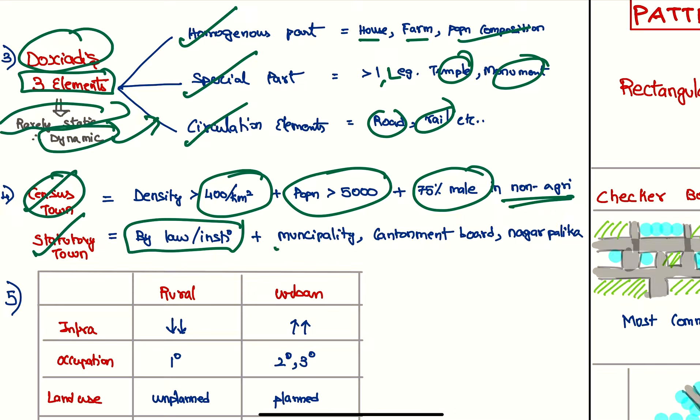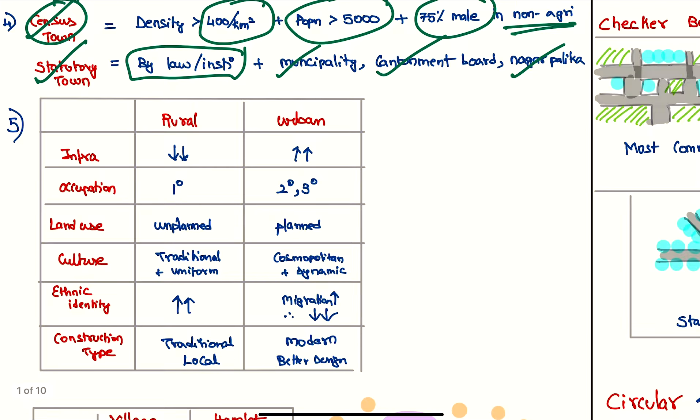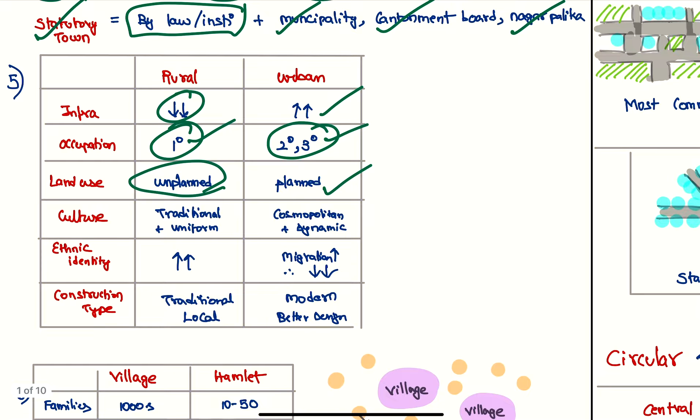Now comparing rural and urban settlements: the infrastructure here is poor, here it is very good. The main occupation is agriculture and allied sectors; here we have manufacturing and services sectors. Land use is highly unplanned here; it is planned land use here. The culture is traditional and uniform here; here it is cosmopolitan and dynamic. High ethnic identity and very poor identity because of high migration—the diversity will be high in urban areas.